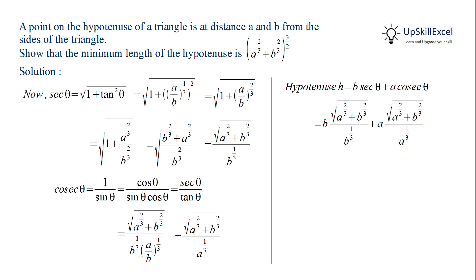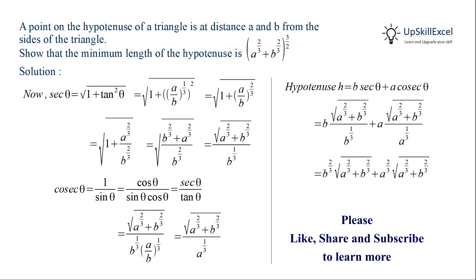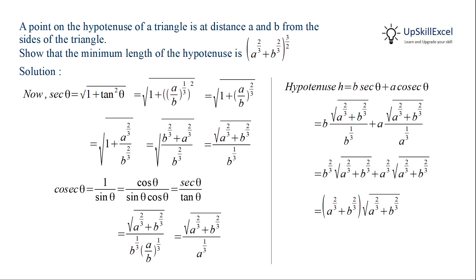Now we substitute sec theta and cosec theta into the formula for the hypotenuse. In the first term, B in the numerator and B raised to 1 over 3 in the denominator cancel to give B raised to 2 over 3. Similarly, in the second term we get A raised to 2 over 3 in the numerator. Taking the square root of A raised to 2 over 3 plus B raised to 2 over 3 common in both terms gives A raised to 2 over 3 plus B raised to 2 over 3 times the square root of A raised to 2 over 3 plus B raised to 2 over 3. Replacing the square root by a power of one half and combining, the minimum hypotenuse equals A raised to 2 over 3 plus B raised to 2 over 3, whole raised to 3 over 2.